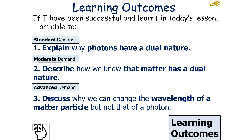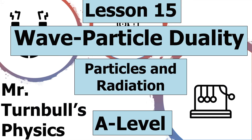If we've been successful in today's lesson, we should be able to explain why photons have a dual nature, describe how we know that matter has a dual nature, and discuss why we can change the wavelength of a matter particle but not that of a photon. I hope you've enjoyed today's lesson on wave-particle duality, which is part of the particle and radiation topic in AQA A-level physics. Thank you very much for listening and have a lovely day.